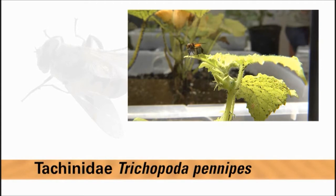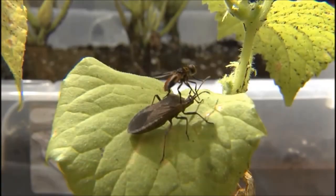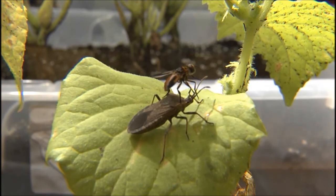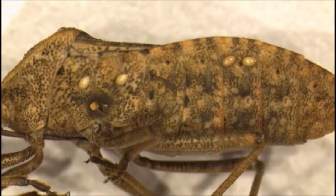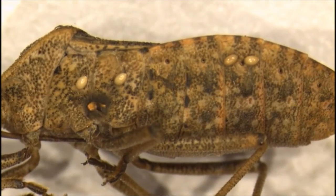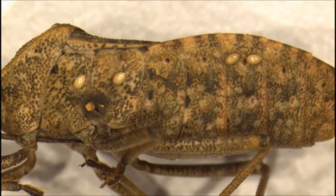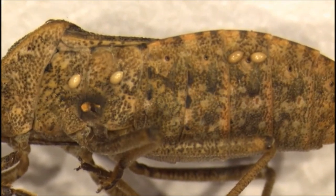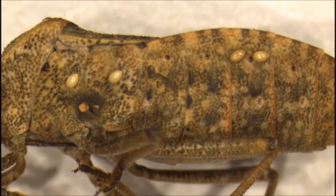The adults are a robust fly ranging in size from a quarter to a half inch in length. When they find a suitable host — in this case the squash bug — the parasitoid lays one or more eggs on the pest. The eggs are light in color, and those deposited on the host are often visible without a microscope.